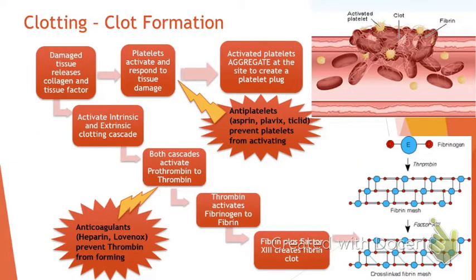Here's the clotting cascade. You probably covered this in anatomy and physiology. There are two paths for clotting. Tissue is damaged - the first line of defense is the platelets. The platelets activate and respond, aggregate, and create a little platelet plug almost instantaneously. Then the clotting cascade comes along behind and puts a big mesh over this plug to make a long-standing clot.